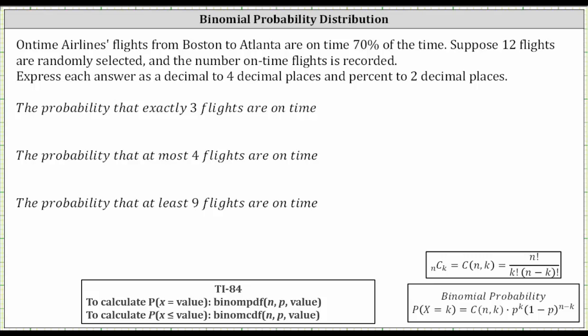On-time Airlines flights from Boston to Atlanta are on time 70% of the time. Suppose 12 flights are randomly selected and the number of on-time flights is recorded. We want to find the probabilities below, and we're asked to express each answer as a decimal to four decimal places and a percent to two decimal places.